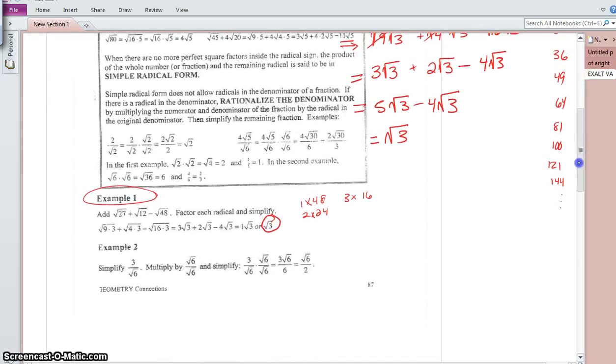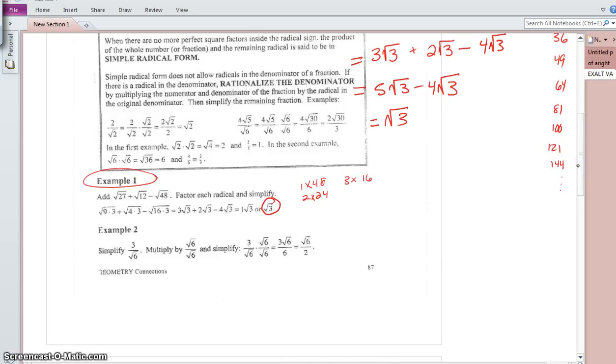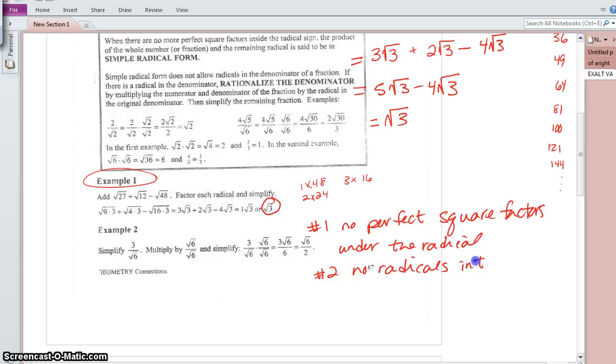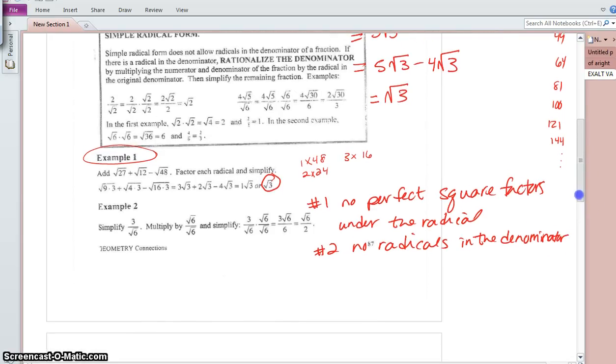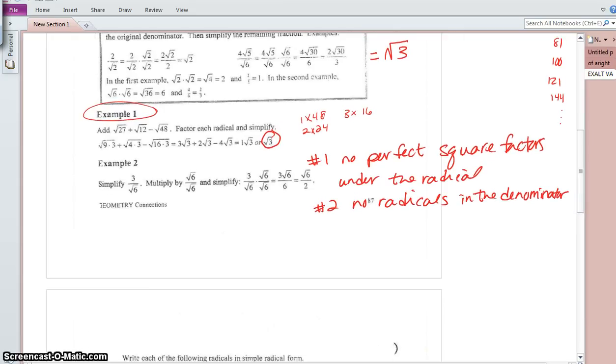And let's talk our way through example 2. Example 2 expresses the rule that says, well there's a couple of rules. The first one we just talked about was no perfect square factors under the radical. Number 2 is no radicals in the denominator. These are kind of rules we've agreed upon for expressing exact values. So this 3 over radical 6, it's not okay to have radical 6 in the denominator, so we need to change that.